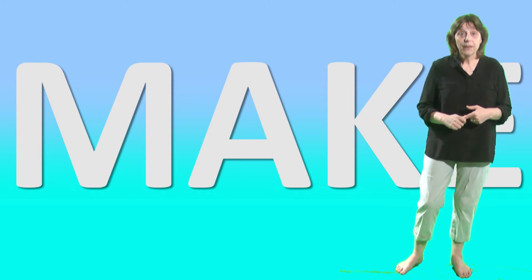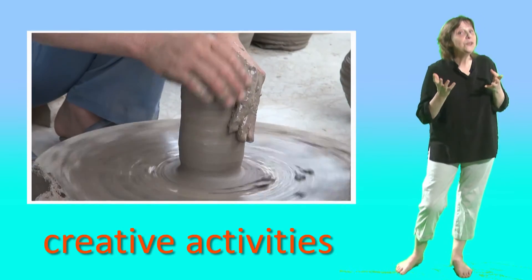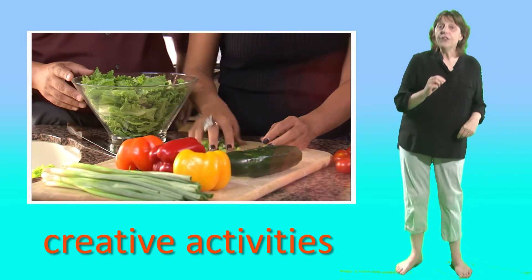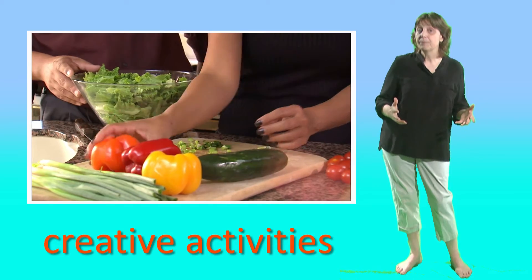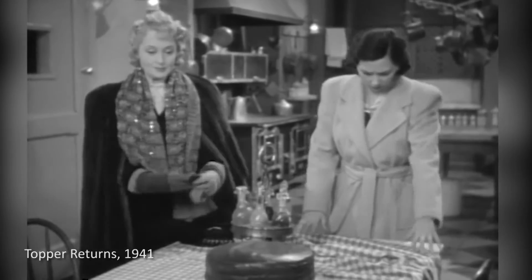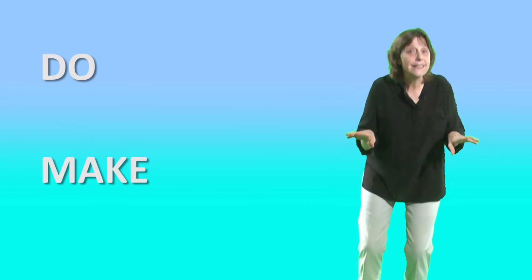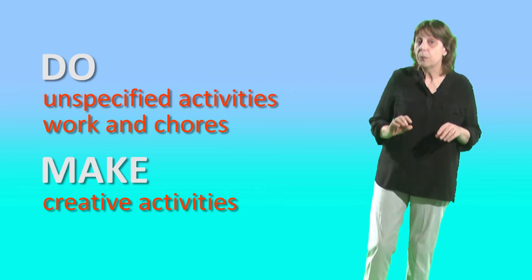Now let's look at 'make.' We use 'make' to talk about creative activities when we bring something new into existence. We often use 'make' to talk about food we prepare. Make yourself a snack, Jason. Make yourself a snack. You could make a sandwich and we've got beer. If you're making a sandwich, make one for me too. Look at the chocolate cake. Emily, make some tea. Tea? Of course, to go with our cake. Those are the key rules when we use 'make' and 'do.'